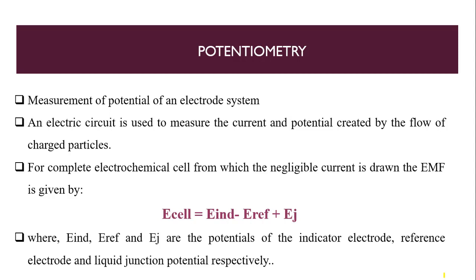Potentiometry is an electrochemical method, so an electrode system is used. An electric circuit is used to measure the current and potential created by the flow of charge particles. For a complete electrochemical cell from which current is drawn, the EMF is given by the E-cell. This is made up of two types of electrodes and one junction.